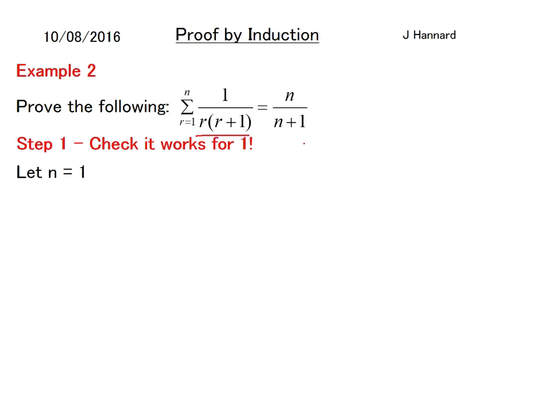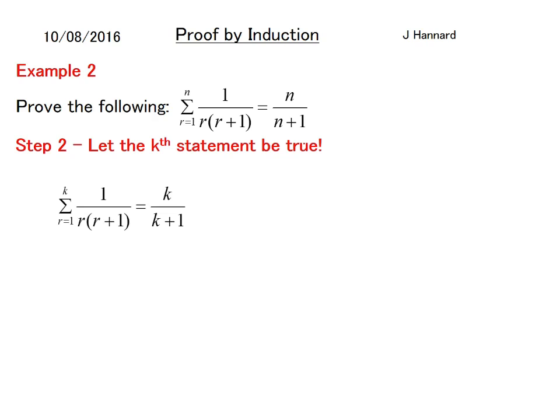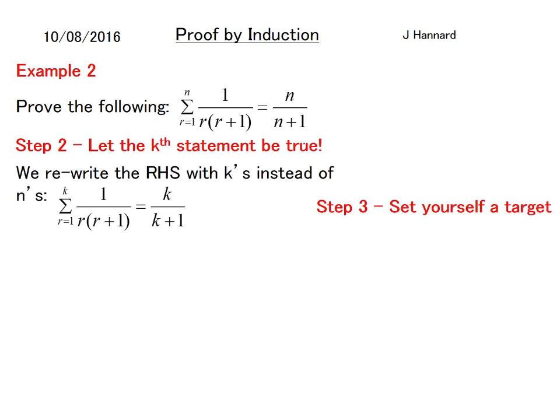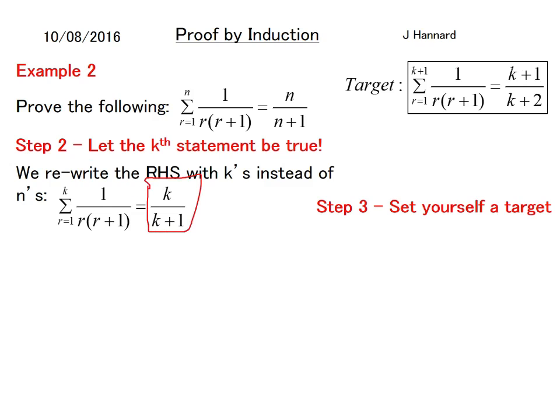So step 1, check it works for 1. Let n equal 1. On the left hand side we've got 1 over 1 times 2 which equals a half. And on the right hand side we've got 1 over 1 plus 1 which is 1 over 2. So it works for n equals 1. Step 2, let the kth be true. So we replace n's with k's and we end up with that. Step 3, set yourself a target. That is the kth statement with k plus 1's in there instead. So our target sits up top on the right. But remember that is the answer but that's not going to get you the marks in the exam.